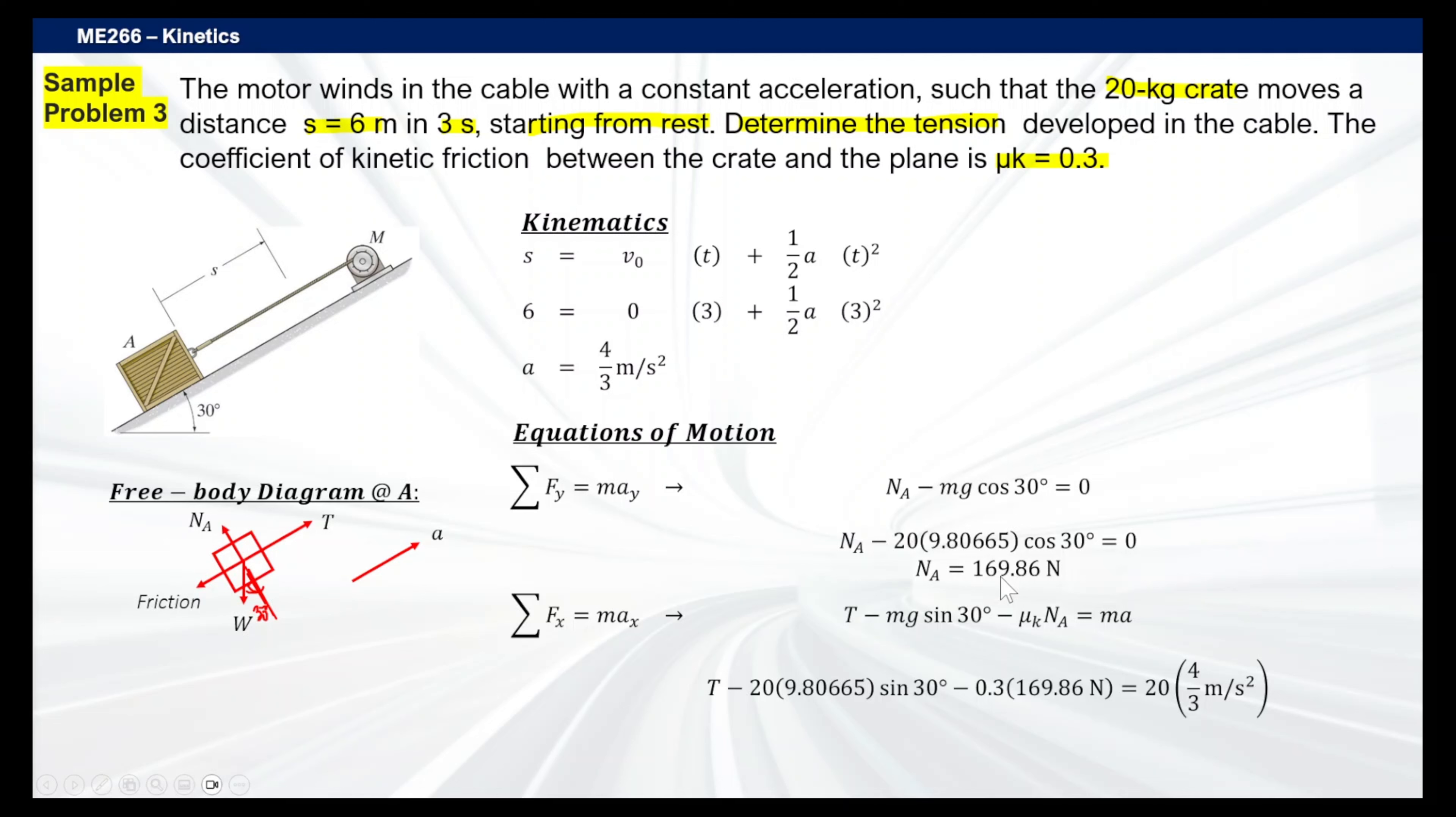And then now you substitute that on the X plane. That will be summation of F of X equals M A of X. That will be T minus the weight, M G sine 30 degrees, and then of course you have minus our kinetic friction. Substitute here your perpendicular force 169.86, and then it goes to M times A, and all of which are given except T. So you just isolate T and you will get the answer at 176 Newtons. That's essentially it.